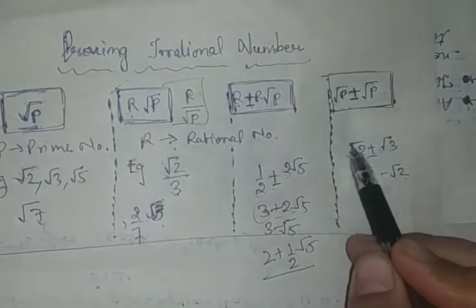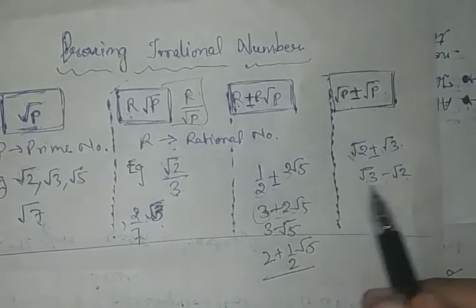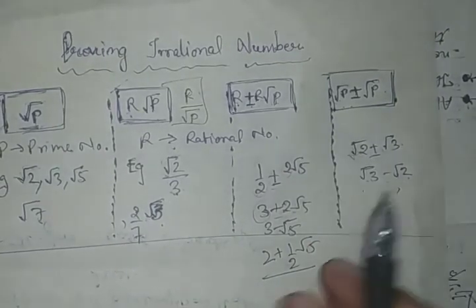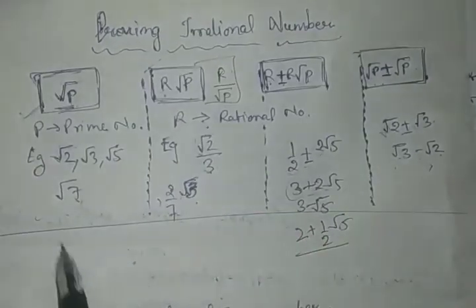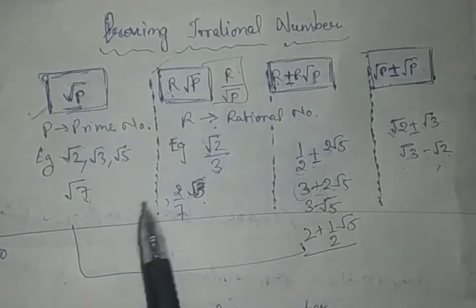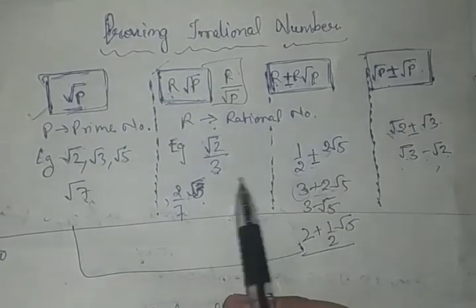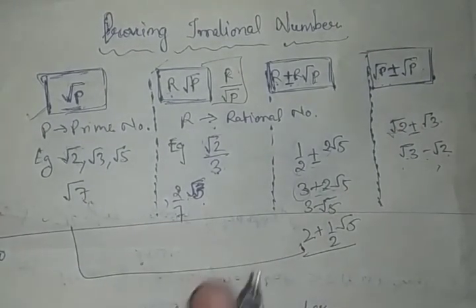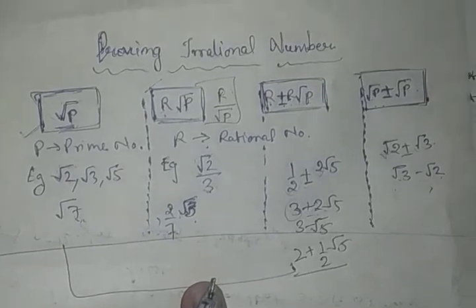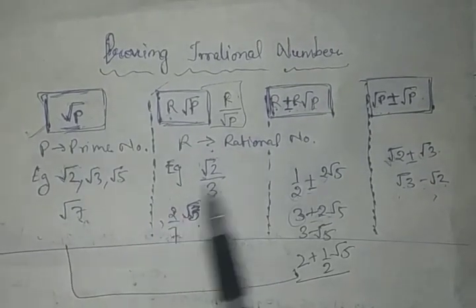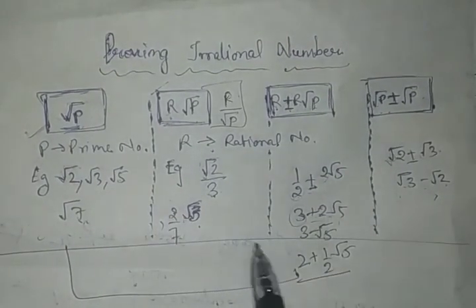Last type है जब दोनों ही root में हों — जैसे root 2 plus root 3, या root 3 minus root 2। Mostly exam में इसी में से एक question आता ही है। तो यह सब हम exercise 1.3 में cover करेंगे और इन चारों को solve करने का method देखेंगे।